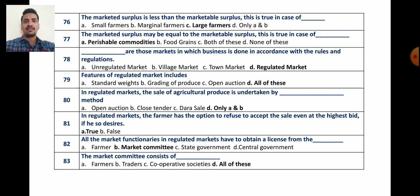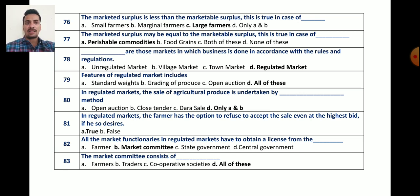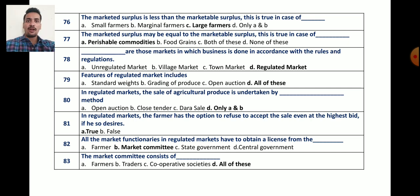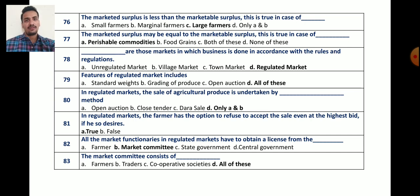Question number 76: the marketed surplus is less than the marketable surplus. This is true in case of which farmers? Options are small farmer, marginal farmer, large farmer, or A and B. The correct answer is large farmer, because they produce agricultural produce in a large quantity, and that is why marketed surplus is less than marketable surplus.